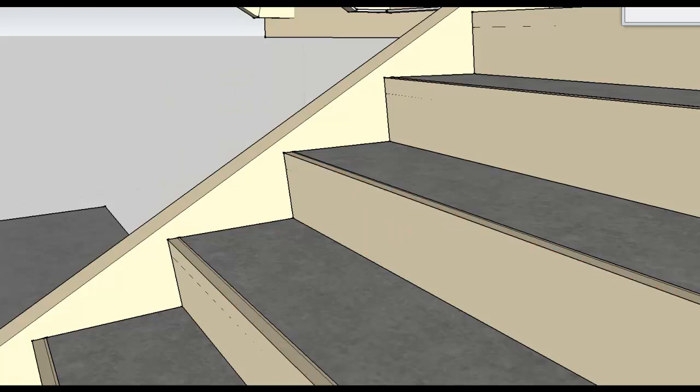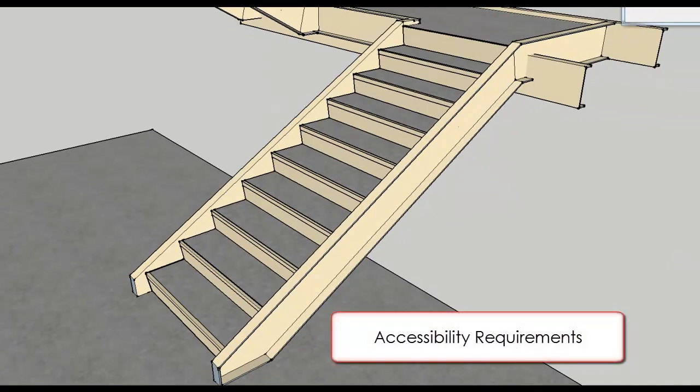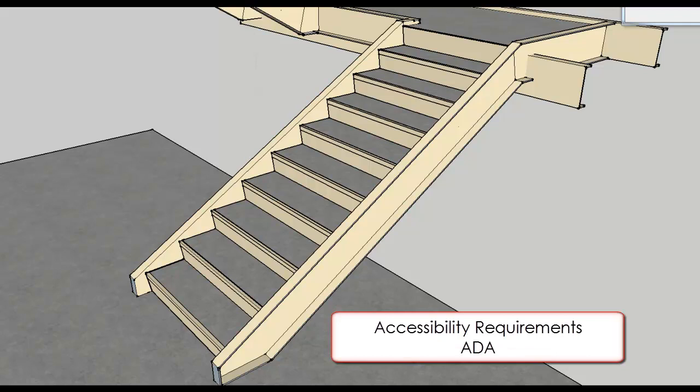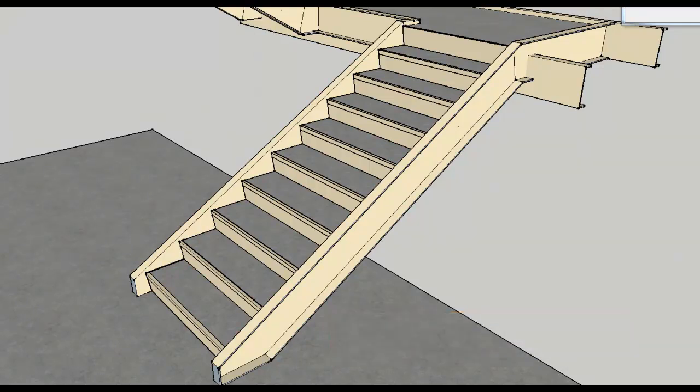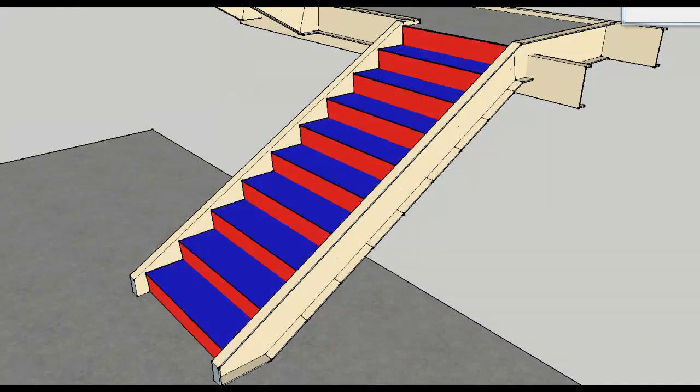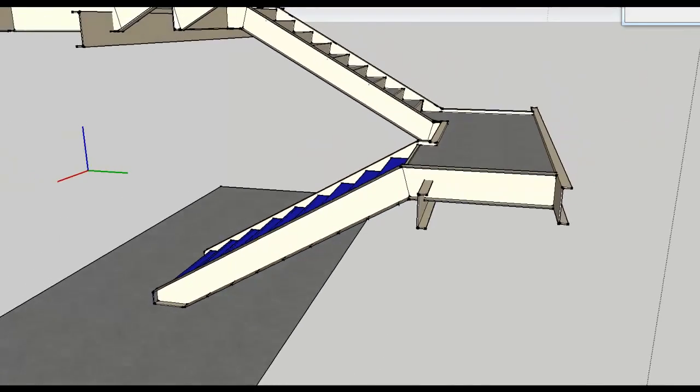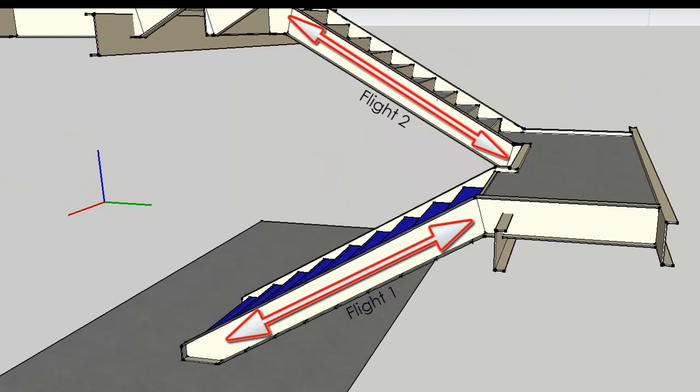With respect to regulation, there is one other requirement when considering stairs, the Americans with Disabilities Act. ADA requires that on any given flight of stairs, all steps shall have uniform riser heights and tread widths. A flight of stairs is one continuous run of stairs before you get to a transition element that would either be the next floor or a landing.